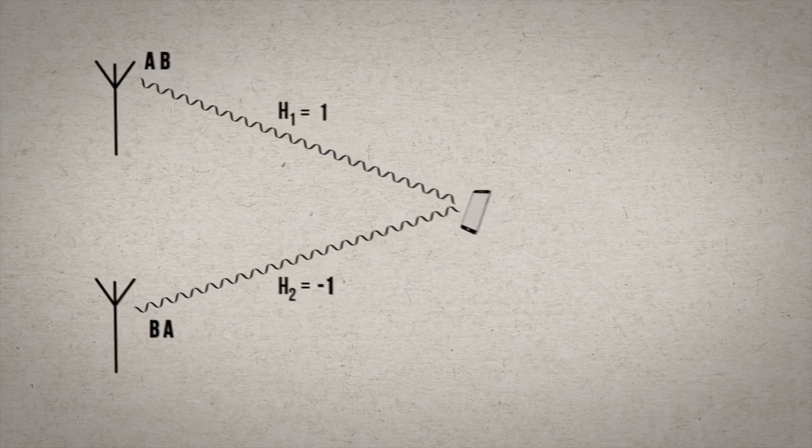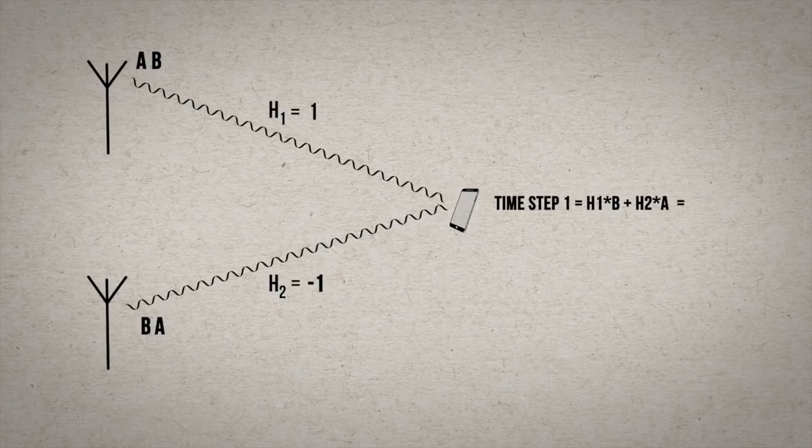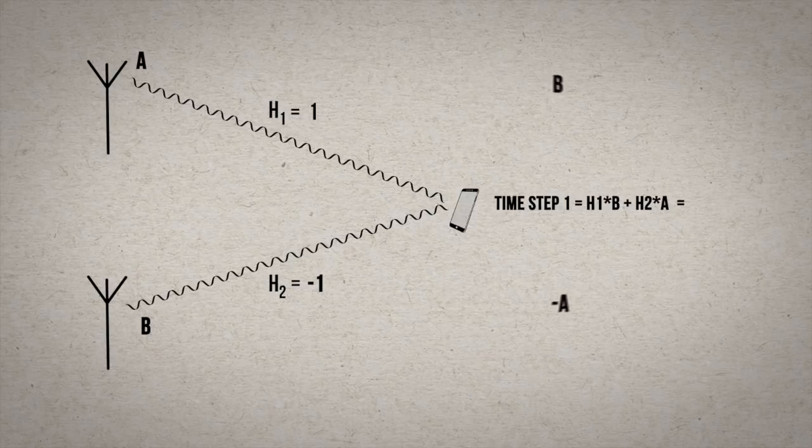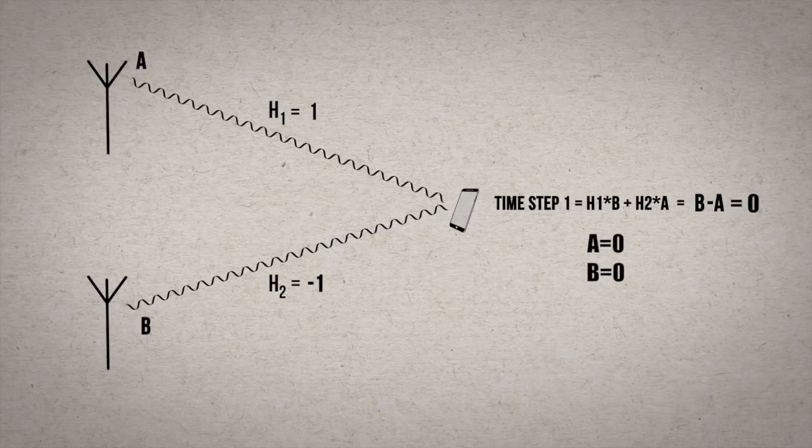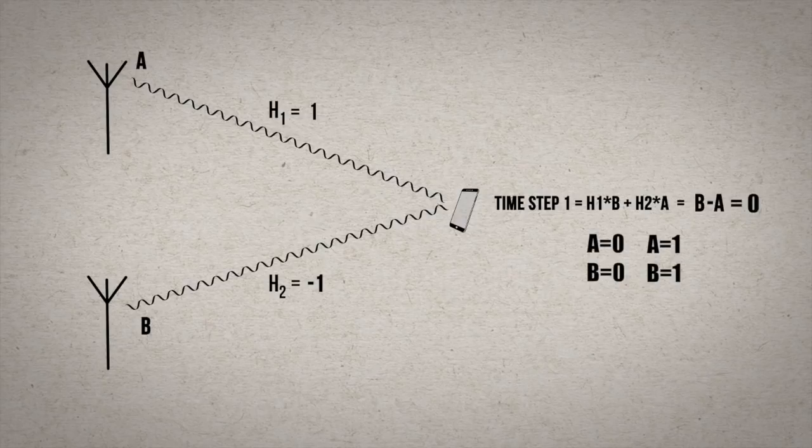Now let's think about what would happen on the receiving end. At the first time step, the receiver would measure a blend of both symbols. In this case, B minus A. And at this point, the receiver doesn't know those individual values of A and B. For example, if it measures zero, what's A and B? A and B could both be zero or both be one. We can't say for sure yet. We don't have enough information. So the receiver needs more information, and that's what the next time step is for.